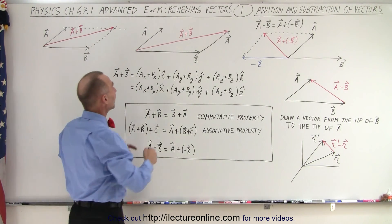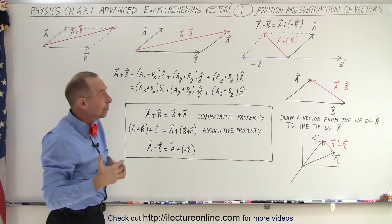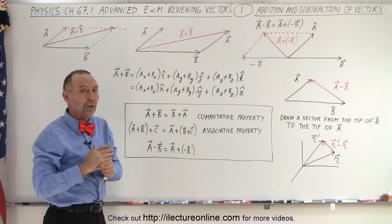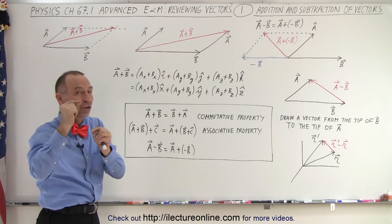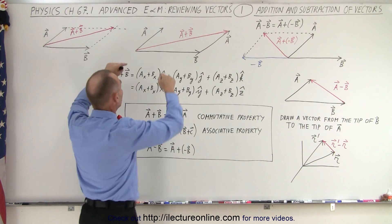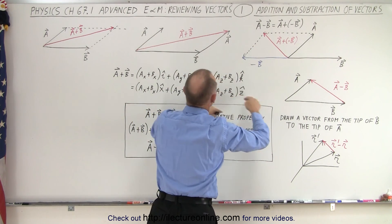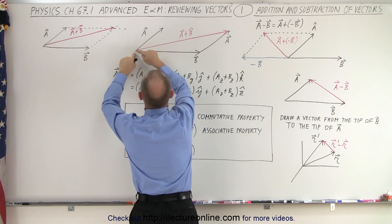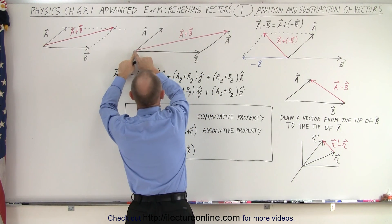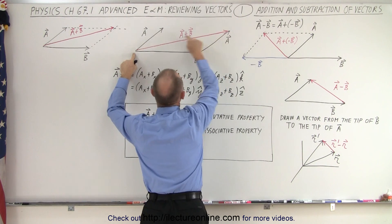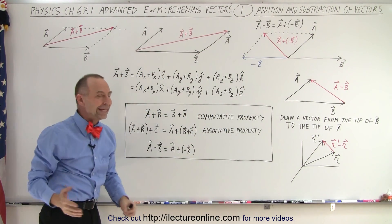We can do the same thing by simply moving vector A. Vectors can be moved in any direction, to any place, as long as we don't change the direction or the length of the vector. So we can move vector A so that the tail of A is touching the tip of B. Then we draw a vector from the tail of B to the tip of A, and that becomes the sum of A and B. We get the exact same result using either technique.